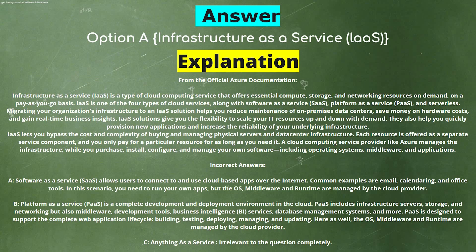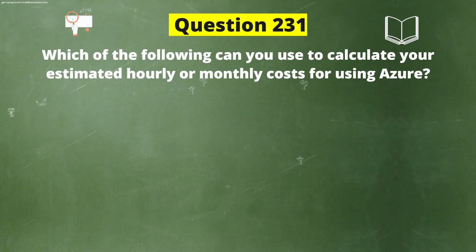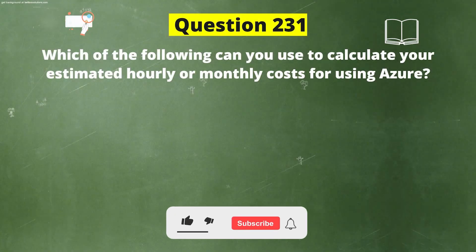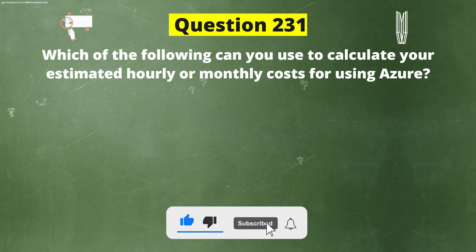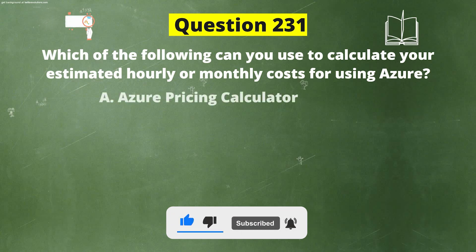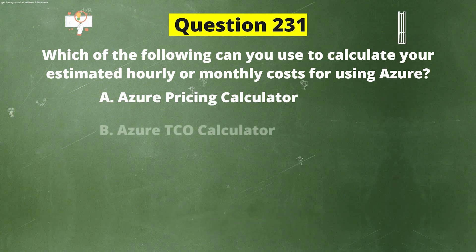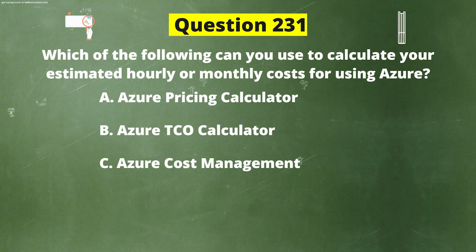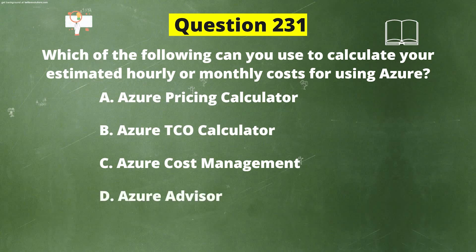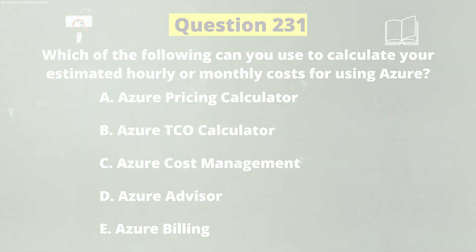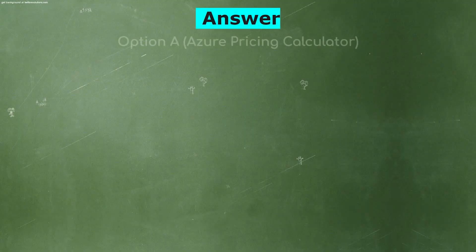Next question: Which of the following can you use to calculate your estimated hourly or monthly cost for using Azure? The options are: A) Azure Pricing Calculator, B) Azure TCO Calculator, C) Azure Cost Management, D) Azure Advisor, E) Azure Billing. The correct answer is option A, Azure Pricing Calculator.